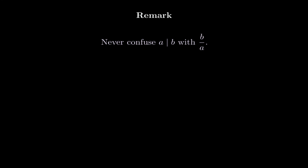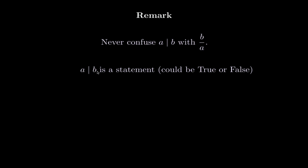Let me make another remark about the notation. When we say a divides b, written with the vertical-line symbol, that is a statement about two integers — it is either true or false. Never confuse this with the fraction b over a. When a equals zero, allowing it in divisibility is fine for the definition, but the fraction b over a is undefined when a is zero. They are not the same thing: a divides b is a statement which can be true or false, while b over a is a number — a rational number. Most books will keep a not equal to zero, and that's what we'll use.